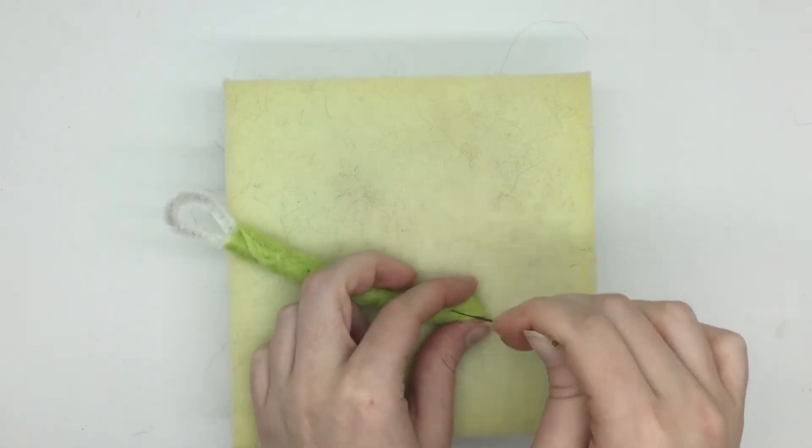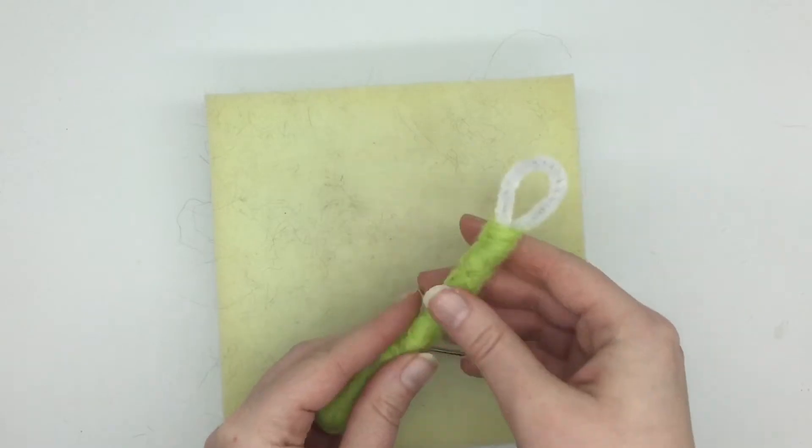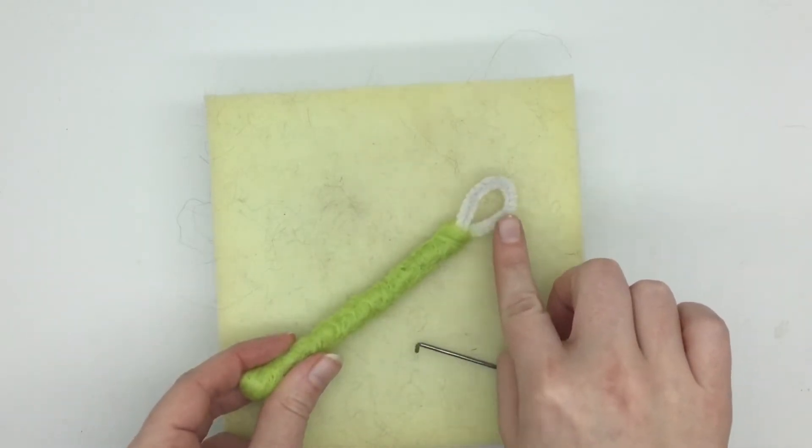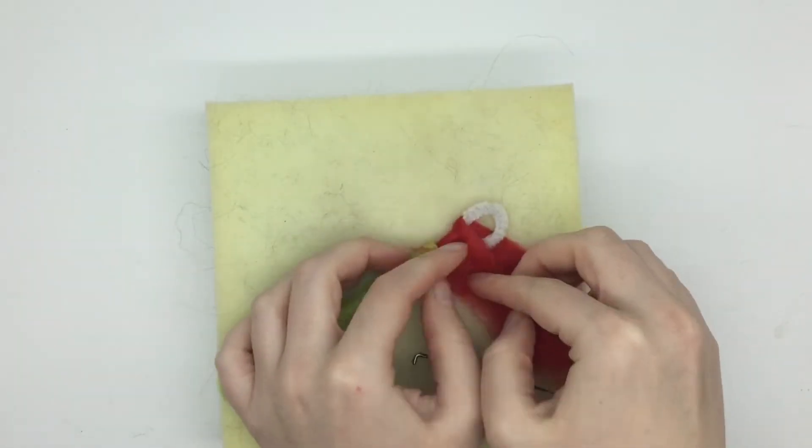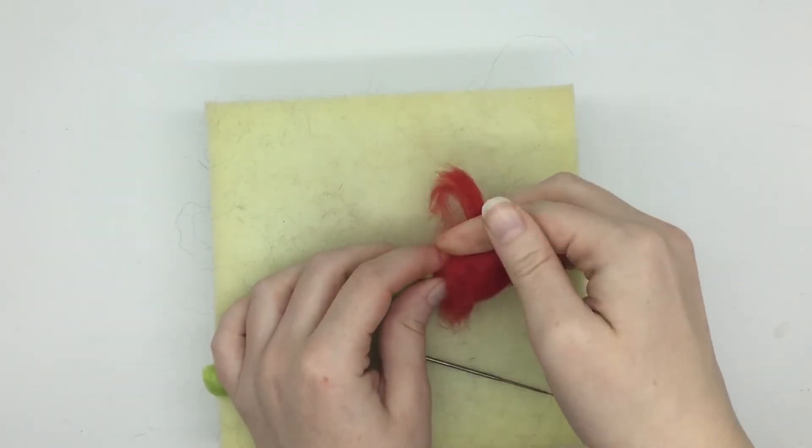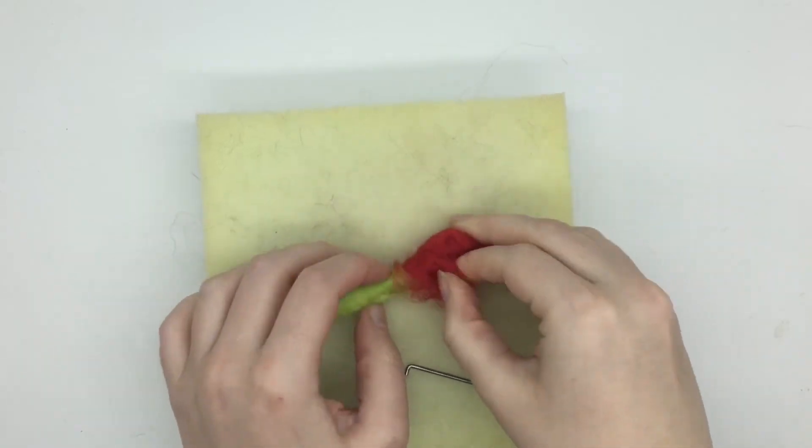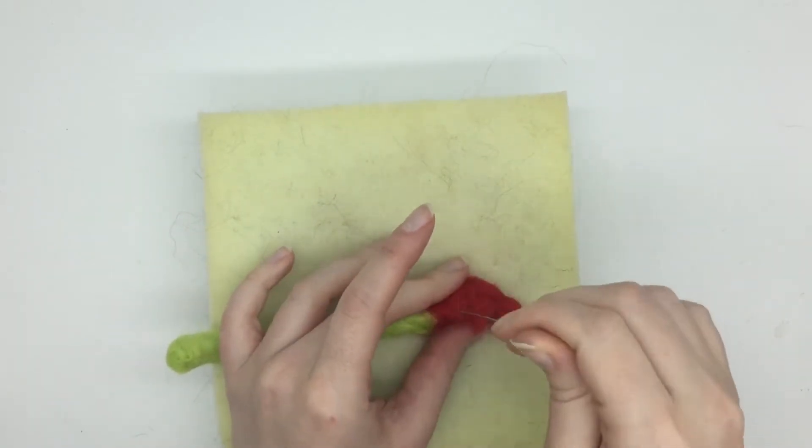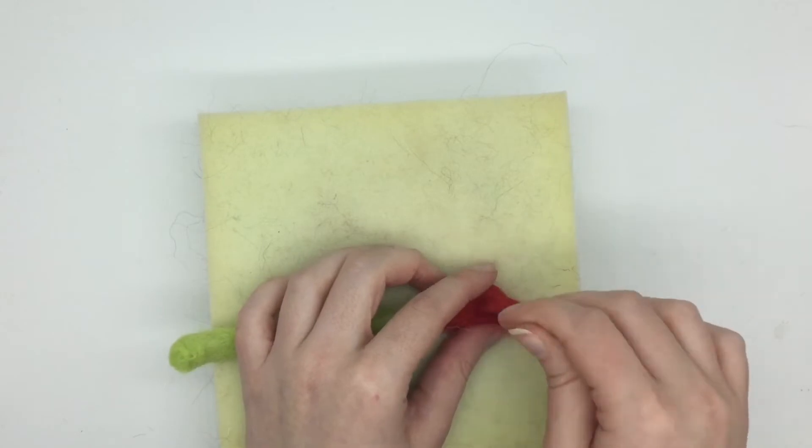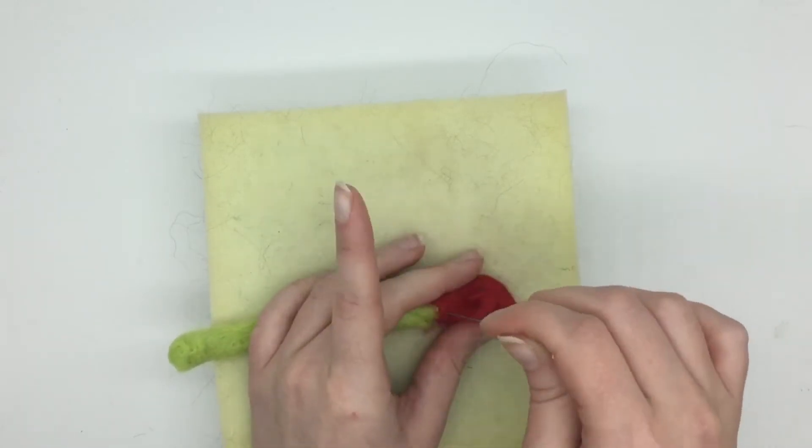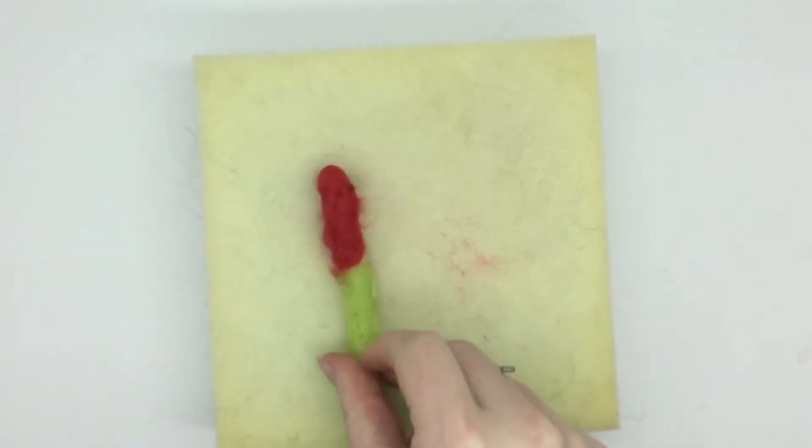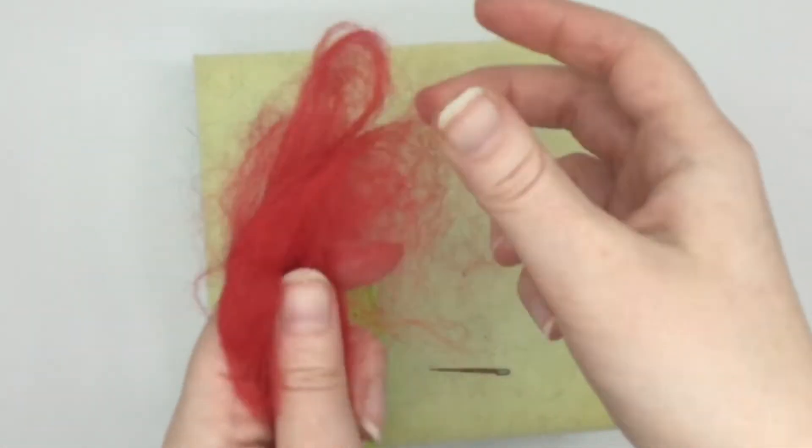Once that is complete, the next thing is to get your red wool and we're going to wrap this around the loop section of the pipe cleaner. This is going to make the center of your rose, and then you're just going to felt that in place, making sure not to felt directly onto the pipe cleaner itself. Here is what it should look like once you've done that.